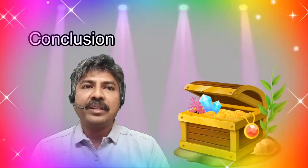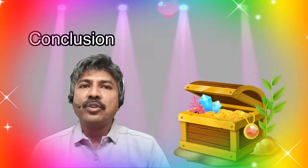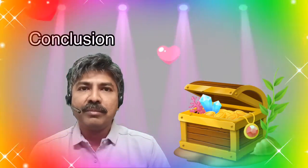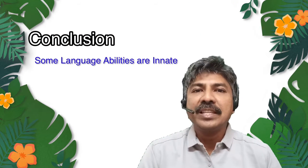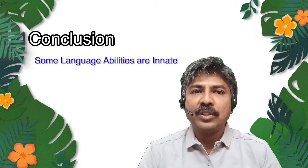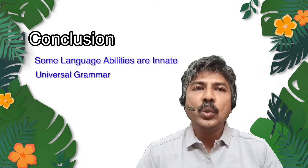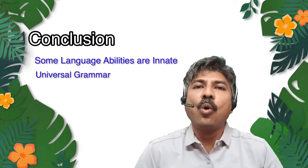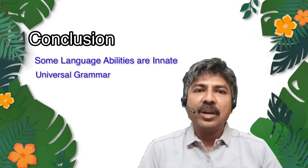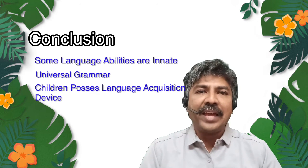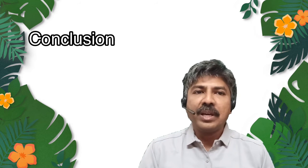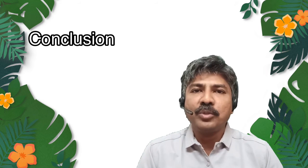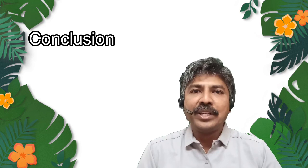The mystery of language acquisition continues to keep psychologists and linguists alike astonished decade after decade. But Chomsky's ideas have created a revolution in linguistics — it can even be dubbed the 'Chomskyan Revolution.' His significant contributions include: first, that some language abilities are innate; second, that Universal Grammar exists for all languages; and third, that children are equipped with the Language Acquisition Device. Thank you for watching.